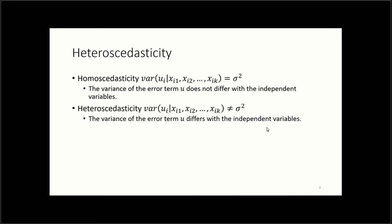For homoscedasticity, we want the variance of u given x1, x2, all the way to xk to equal sigma squared. In other words, we want the variance of the error term u to not differ with the independent variables — we want stable and constant variance. Heteroscedasticity is the opposite: the variance of u given all x does not equal sigma squared, so the variance of the error term differs with the independent variables.